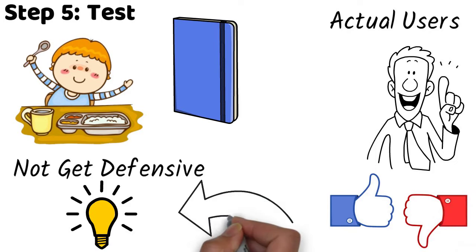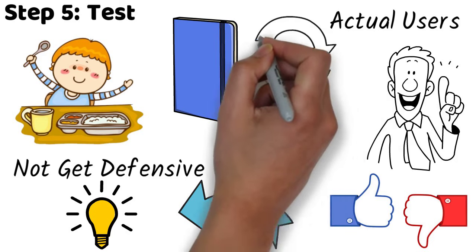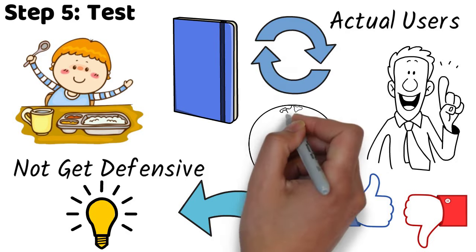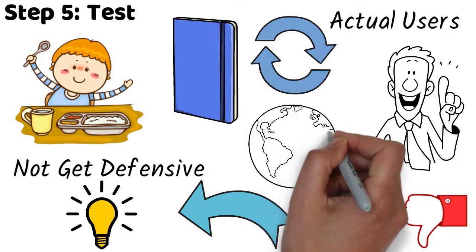Then you can loop back to ideation and prototyping again to get a better improved concept by applying what you've learned. Repeat this until you've created a prototype that solves the problem and works in the real world.